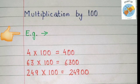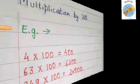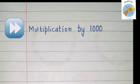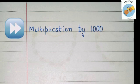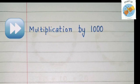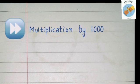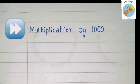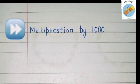Let's move on to multiplication by one thousand. To multiply a number by one thousand, we will simply put three zeros at the end — that is in the ones, tens and hundreds place — and then we will multiply the number by one.